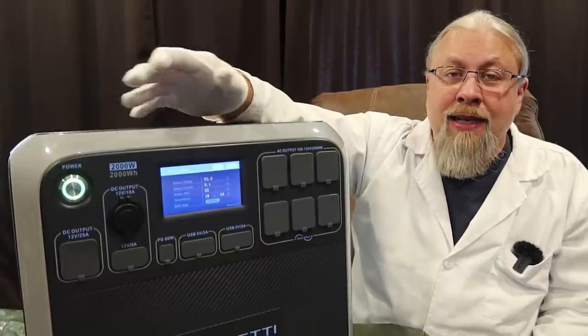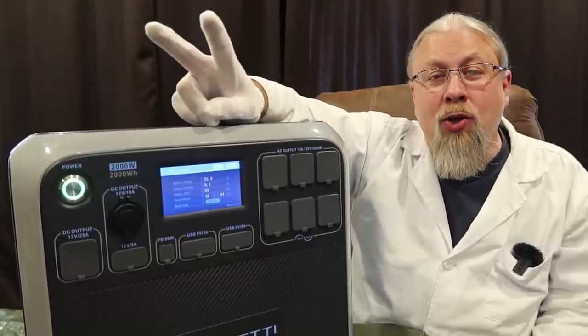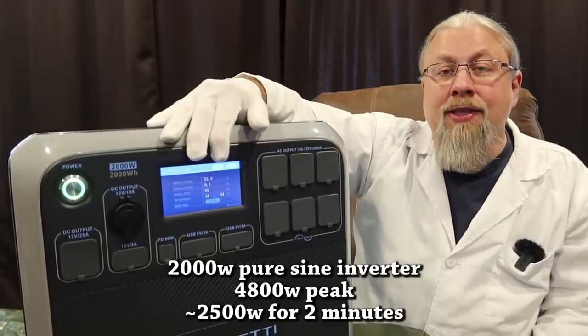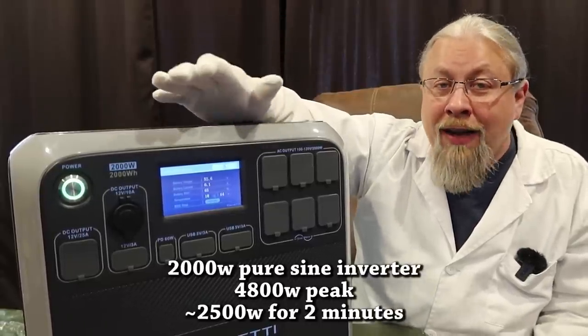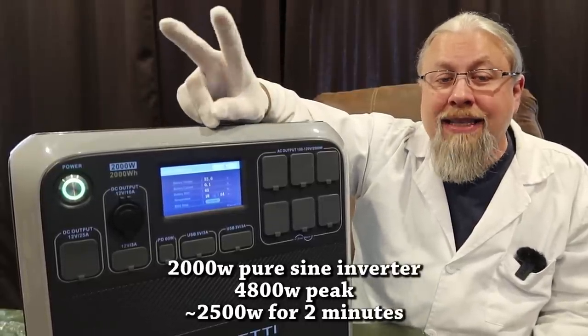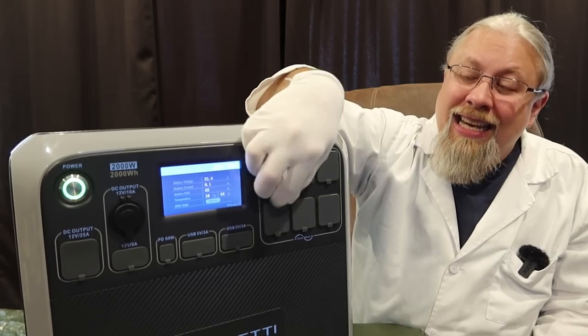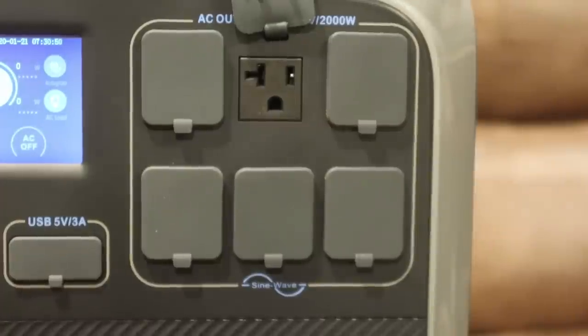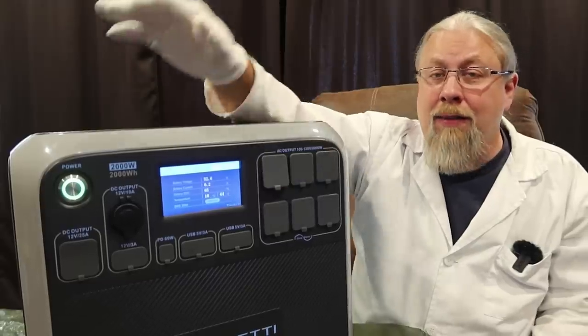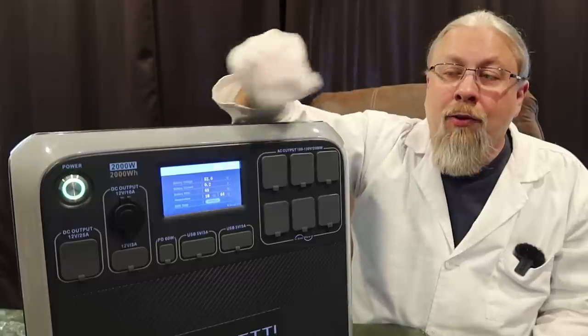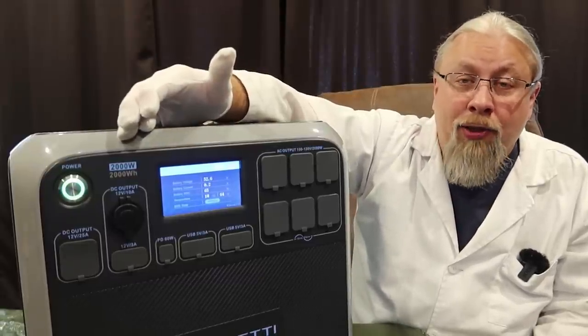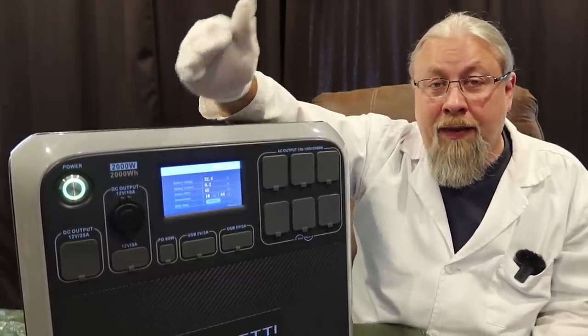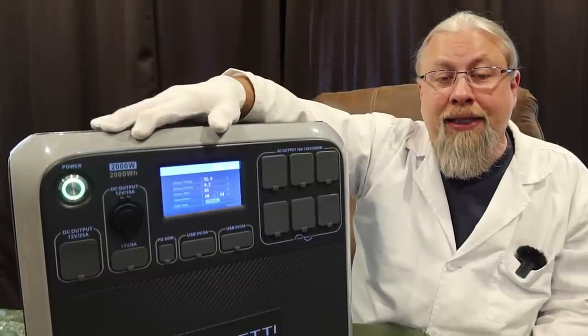As for the inverter size, this thing rocks a whopping 2,000 watt Pure Sine inverter with a 4,800 watt surge and can run up to 2,500 watts for two minutes. This has six three-prong 20 amp outlets. You're not going to be short on power with this thing. Of course, anything in this caliber nowadays is going to have an MPPT solar controller in it, which means it's going to charge really fast from solar.